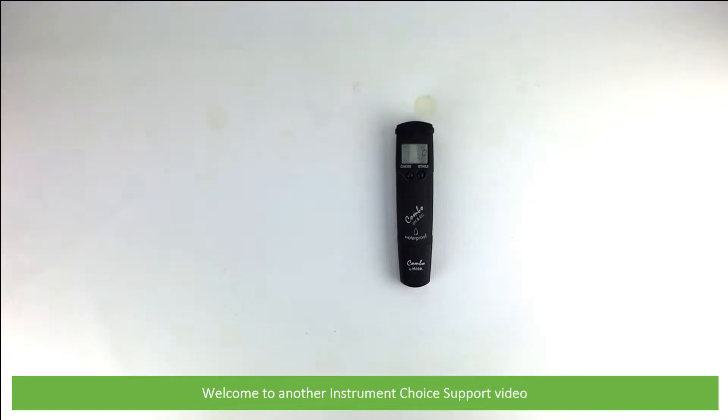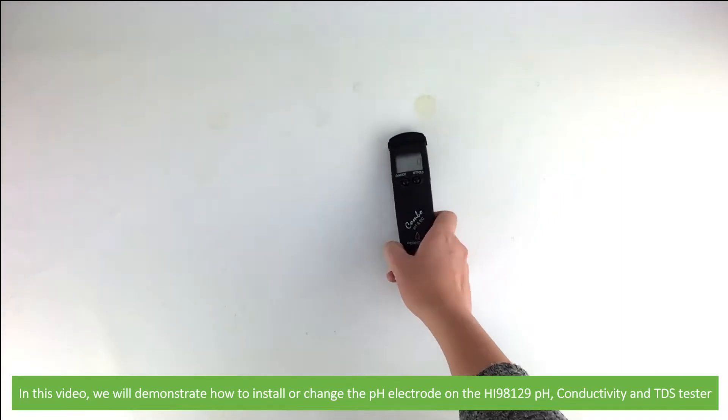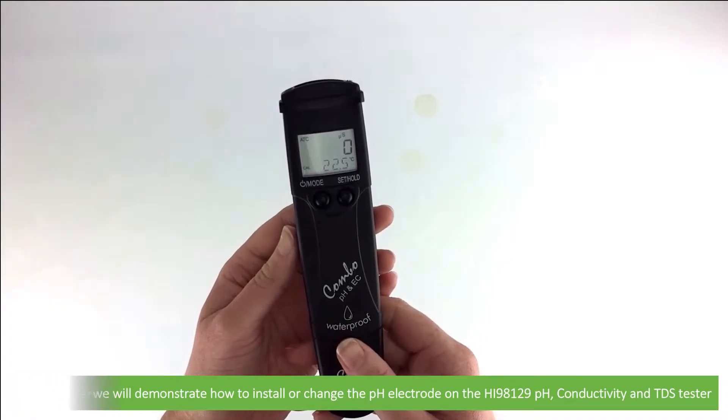Hi and welcome to another Instrument Choice support video. In this video we'll demonstrate how to install or change the pH electrode on the HI98129 pH conductivity and TDS tester.